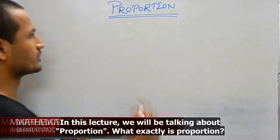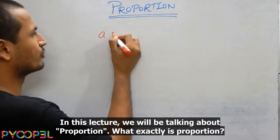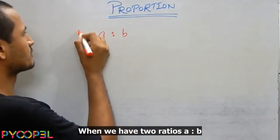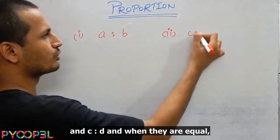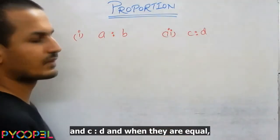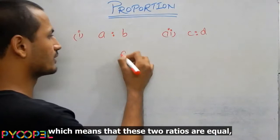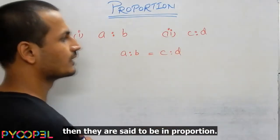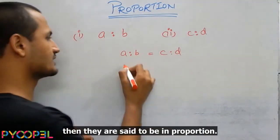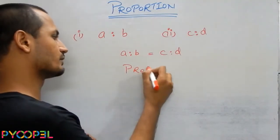What exactly is a proportion? When we have two ratios A is to B and C is to D and they're equal, which means that these two ratios are equal, then they are said to be in proportion.